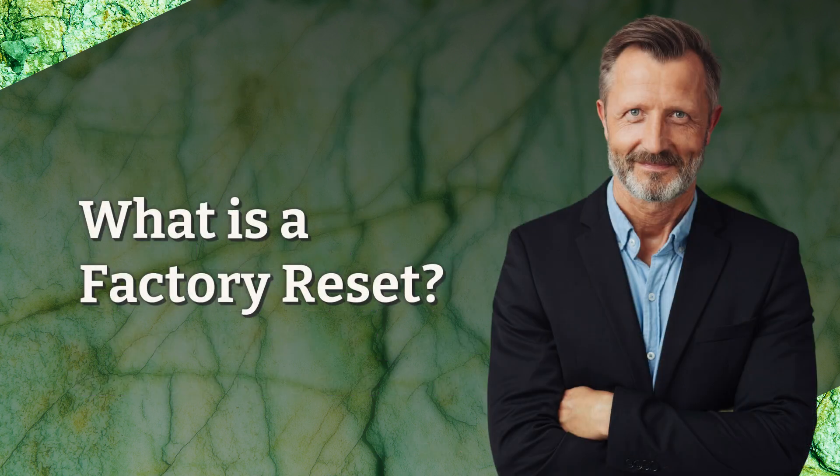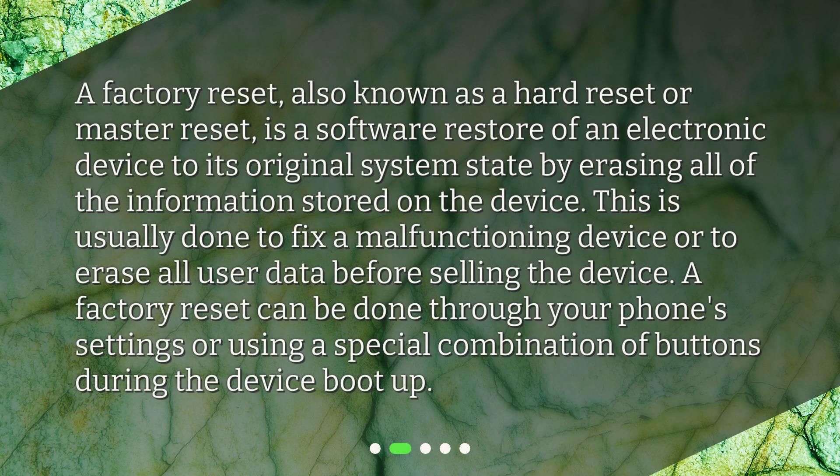What is a factory reset? A factory reset, also known as a hard reset or master reset, is a software restore of an electronic device to its original system state by erasing all of the information stored on the device. This is usually done to fix a malfunctioning device or to erase all user data before selling the device. A factory reset can be done through your phone's settings or using a special combination of buttons during the device boot up.